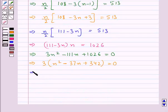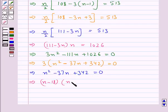So we get n² - 37n + 342 equals 0. Now solving this quadratic equation by splitting the middle term, we get (n - 18)(n - 19) equals 0.